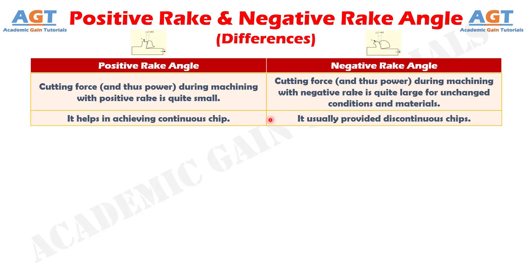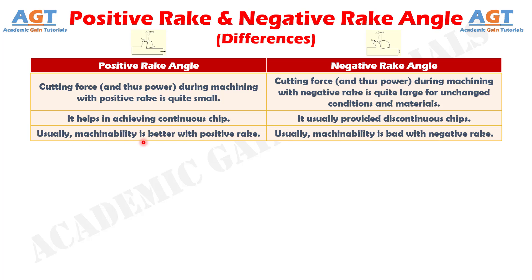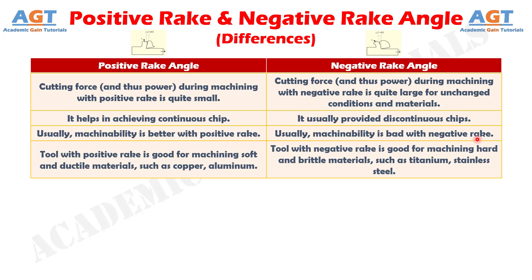Number 8: Positive rake helps in achieving continuous chips, whereas negative rake usually produces discontinuous chips. Number 9: Usually, machinability is better with positive rake, whereas usually machinability is bad with negative rake. And difference number 10: A tool with positive rake is good for machining soft and ductile materials such as copper and aluminum, whereas a tool with negative rake is good for machining hard and brittle materials such as titanium and stainless steel.